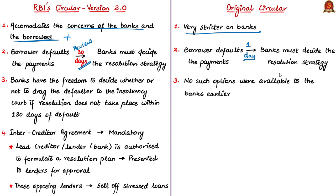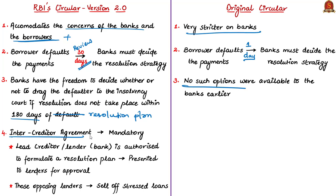In the new system, banks have the freedom to decide whether to take the defaulter to the adjudicating authority when resolution is not taking place within 180 days of the resolution plan — an option not available in the earlier circular. RBI has also made the inter-creditor agreement between lenders mandatory, ensuring that banks will have a collective or common voice.